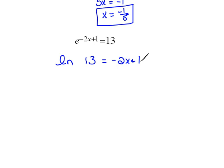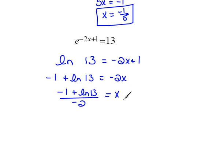Now, at this stage, we can just simply solve for x. If we subtract 1 from both sides, I'm going to put that at the beginning so that it's not confused as 13 minus 1, which that's not. And then dividing both sides by negative 2, we get x equals negative 1 plus the natural log of 13 divided by negative 2. This is an exact answer.